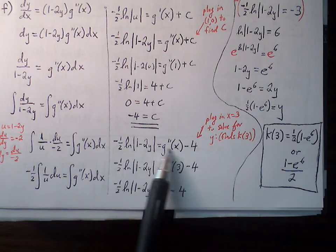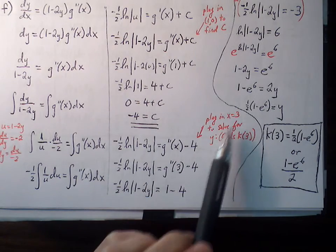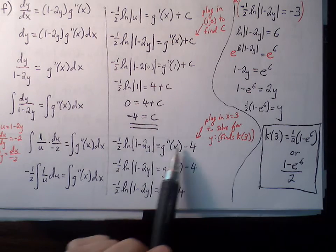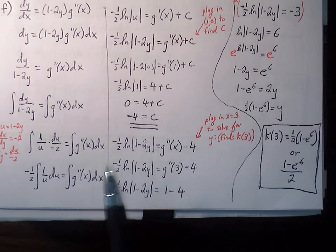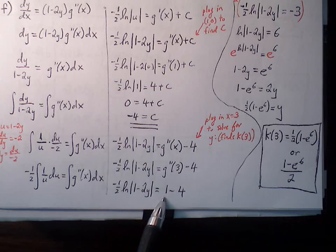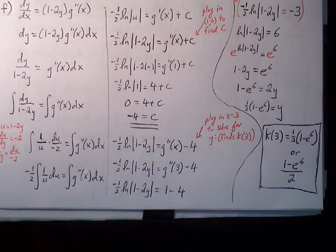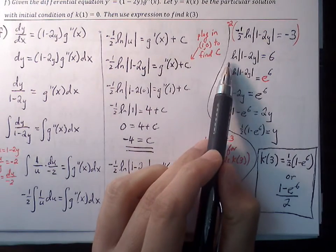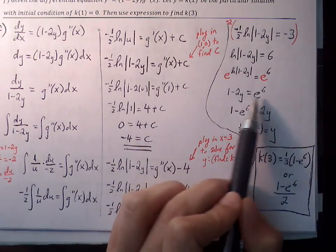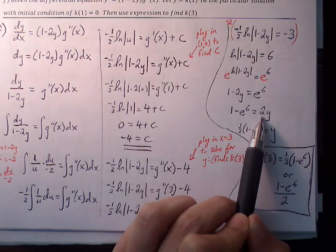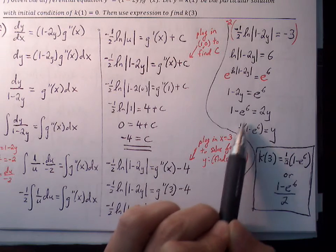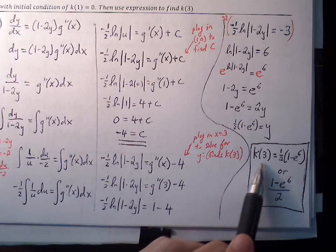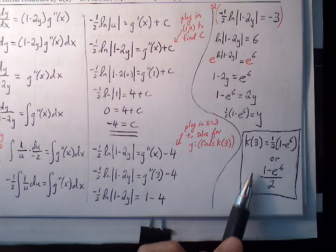We update our equation with C equals negative four. Rather than solving for y generally, we plug x equals three in directly to find k of three. G double prime of three from our table equals one. So we have negative one half times natural log of the absolute value of one minus two y equals G prime of three plus negative four, giving negative three. Multiplying both sides by negative two: natural log of one minus two y equals six. Raising both sides as base e: one minus two y equals e to the sixth. Solving for y: k of three equals one half times one minus e to the sixth, or equivalently, one minus e to the sixth all over two.